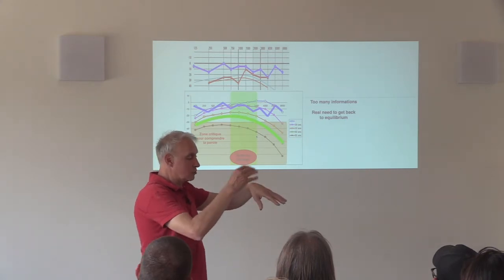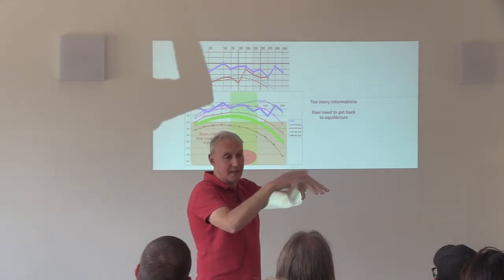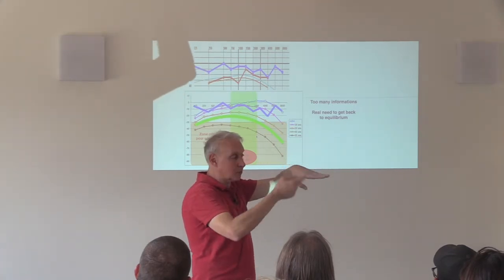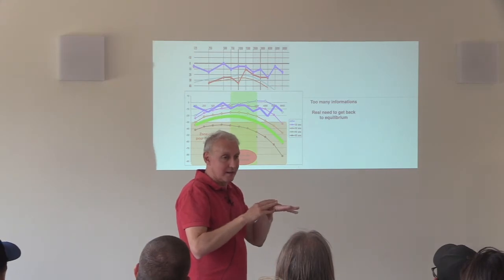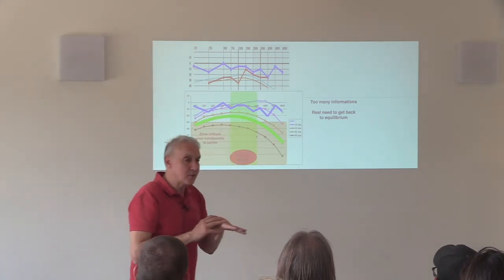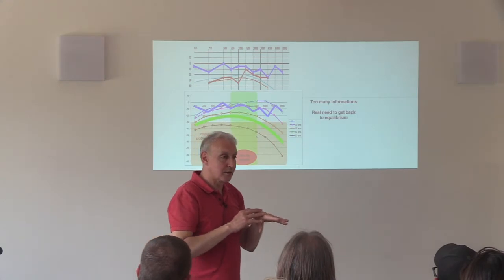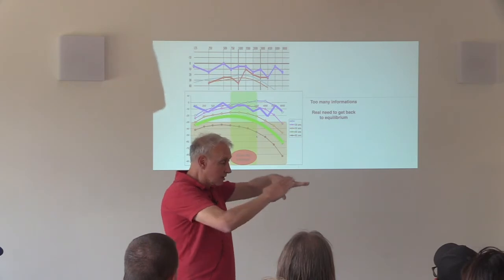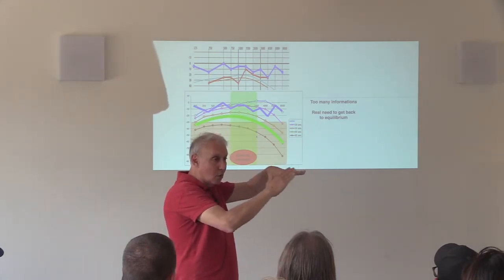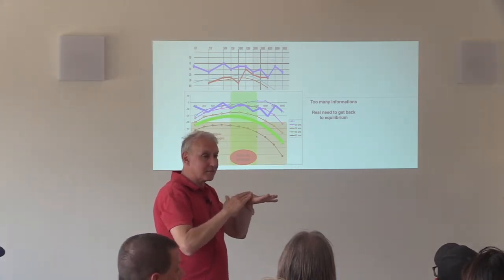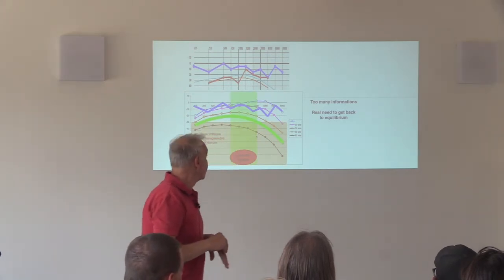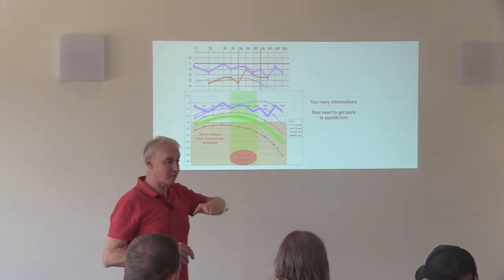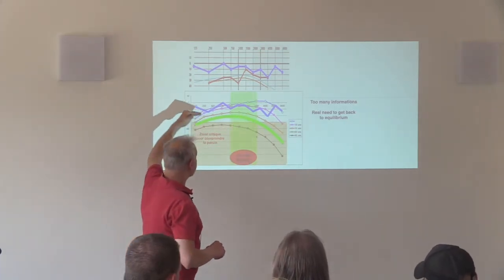If you do this to your hand once, it's okay. But if you do this all the time, it will burn, and when you touch it, you will cry. This is what's happening to people who are in burnout — too much electrosmog, too much information. They are always receiving information. Instead of having a normal auditory profile, they have a very high and very flat one.